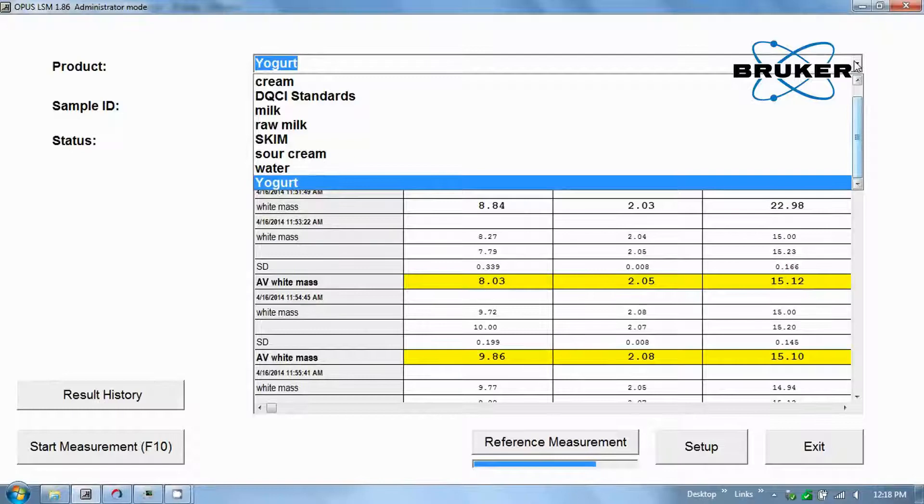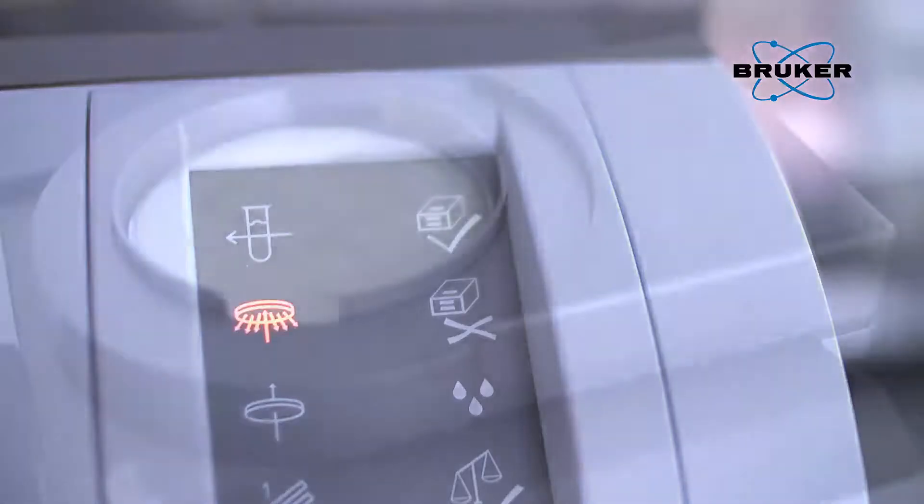Using the pull-down menu, yogurt is selected and the measurement can begin. While the measurement is running, you can place a fluid milk, whey, or cream sample.